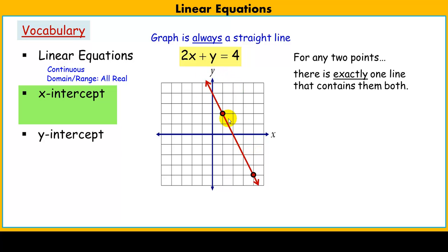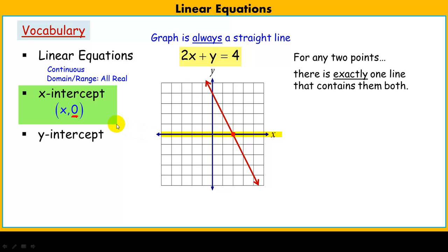Because it is continuous and goes on forever, every single linear equation must cross the x-axis — every single one, with one exception we'll get to later — and therefore it must have an x-intercept. The x-intercept is where the line crosses the x-axis. Every single point on the x-axis has a y-value of 0. When someone asks you for the x-intercept, you would say 2 in this case, but understand it is a point that's on the line.